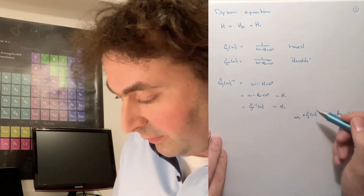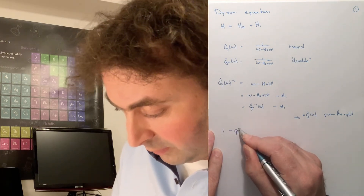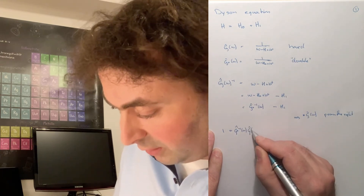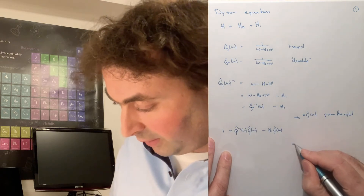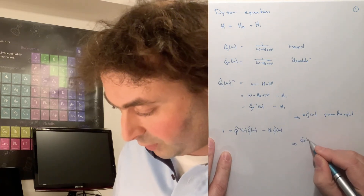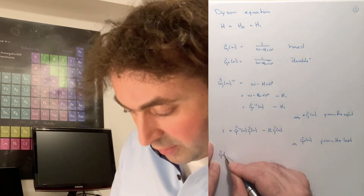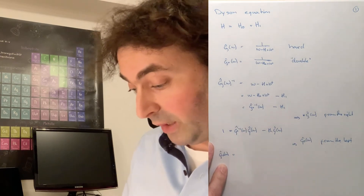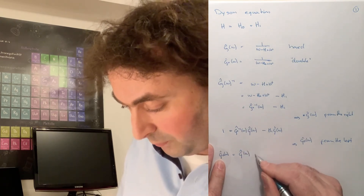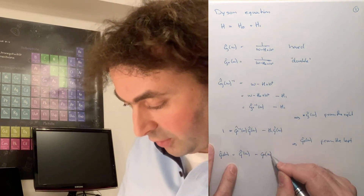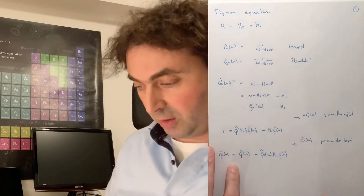If we multiply from the right, we have G times G inverse or G inverse times G, which is 1, giving us G0 inverse times G of omega minus H1 times G of omega. In the next step, we multiply with G0 of omega from the left. That gives us G0 of omega times 1 is G0, and G0 times G0 inverse is just 1. So our bare Green's function is equal to the full Green's function minus G0 times H1 times the full Green's function, where we call G0 the bare Green's function and G the full Green's function.